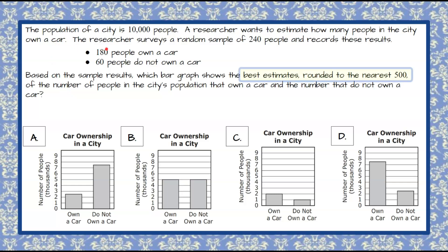So we're going to begin by understanding that we are looking for the best estimate rounded to the nearest 500 of the people that own a car and the number that don't. So we're looking to see which one of these four bar graphs represents this data. We know that the population is 10,000 people so that the bar graph that is correct is going to represent a total of 10,000 people. So let's start by understanding what that looks like on the bar graph.